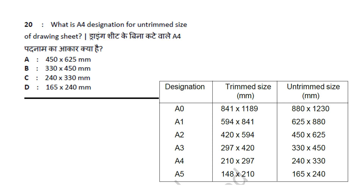A0, A1, A2, A3, A4, A5 are good designations for corresponding trimmed and untrimmed sizes. The question is about A4 — A4 untrimmed size is 240 by 330mm. So the answer is option C: A4 untrimmed size designation is 240 by 330mm.